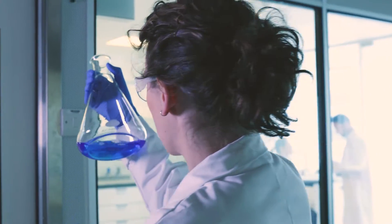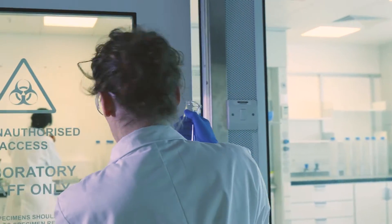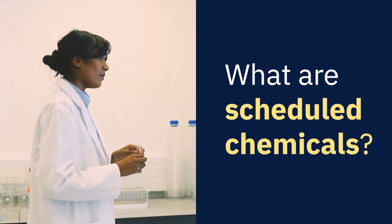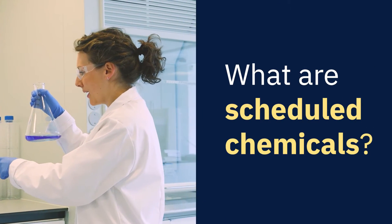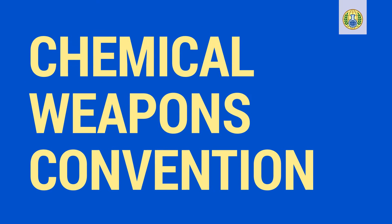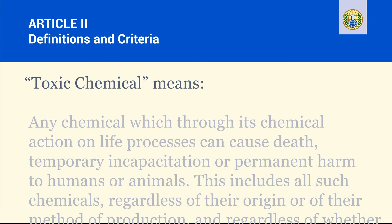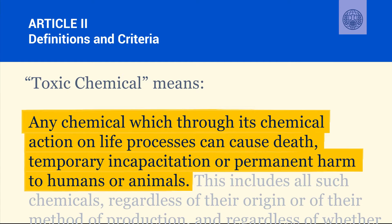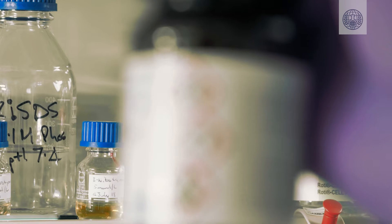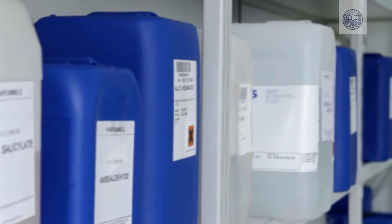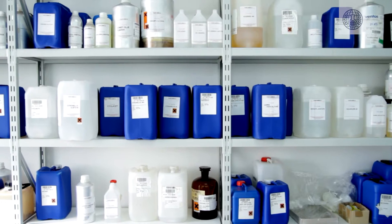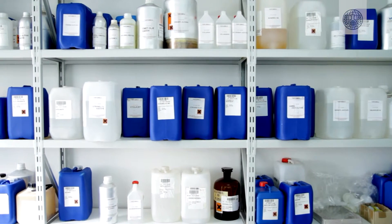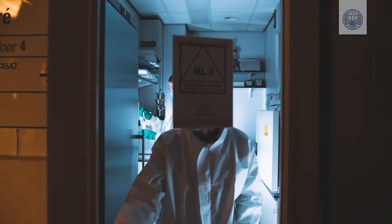Many toxic chemicals fall under the verification regime of the Chemical Weapons Convention. The Chemical Weapons Convention defines a toxic chemical as any chemical which, through its chemical action on life processes, can cause death, temporary incapacitation, or permanent harm to humans or animals. Toxic chemicals and their precursors — the chemical reactants used to make a chemical weapon — can be considered chemical weapons under the Convention depending on how they are used and the quantities possessed.